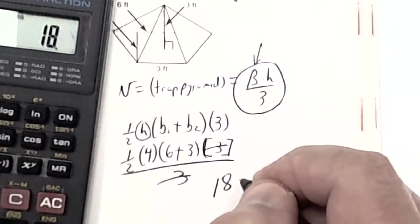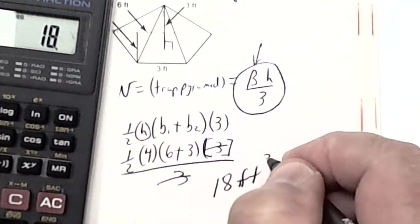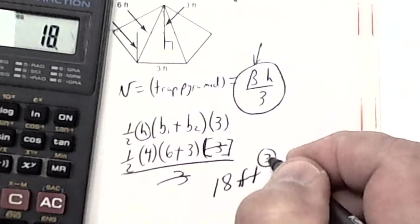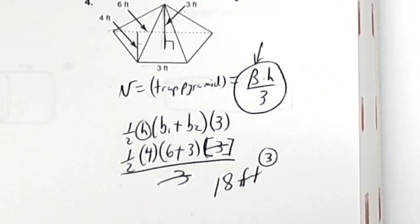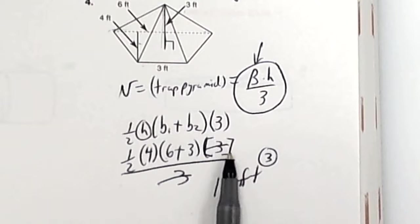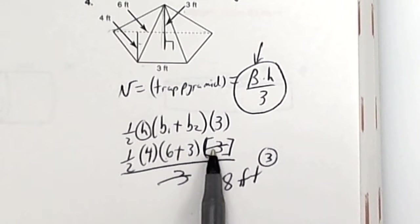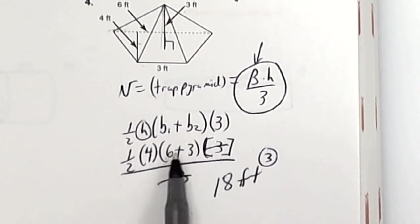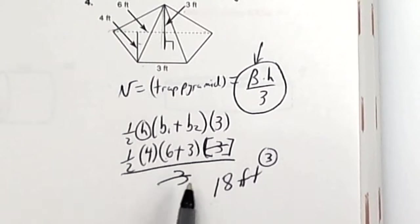If you don't understand how to reduce, just go ahead and take 9 × 3 × 4, divide by 2, and then divide by 3. Try it on your calculator just to make sure.